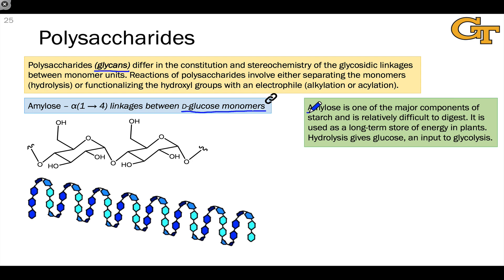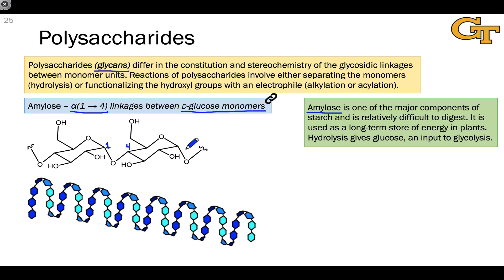Amylose is one of the most important polysaccharides. It's a polymer of D-glucose with alpha 1,4 linkages. Let's verify that: the anomeric oxygen of the glucose unit has the oxygen in an axial position, which suggests the alpha configuration. And it's a 1,4 linkage — carbon 1 of this monomer unit is involved and carbon 4 of the next monomer unit is involved. We can verify that by starting at carbon 1 and numbering around away from the oxygen. So amylose consists of an alpha 1,4 linkage.